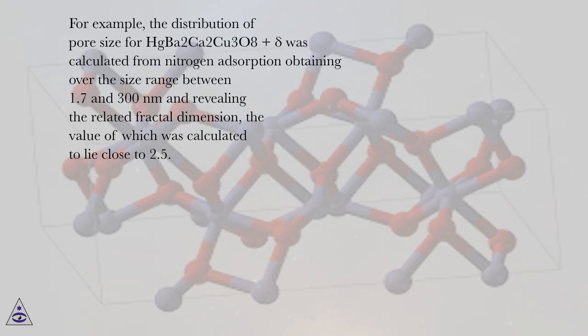For example, the distribution of pore size for HgBa2Ca2Cu3O8+δ was calculated from nitrogen adsorption obtaining over the size range between 1.7 and 300 nanometers and revealing the related fractal dimension, the value of which was calculated to lie close to 2.5.